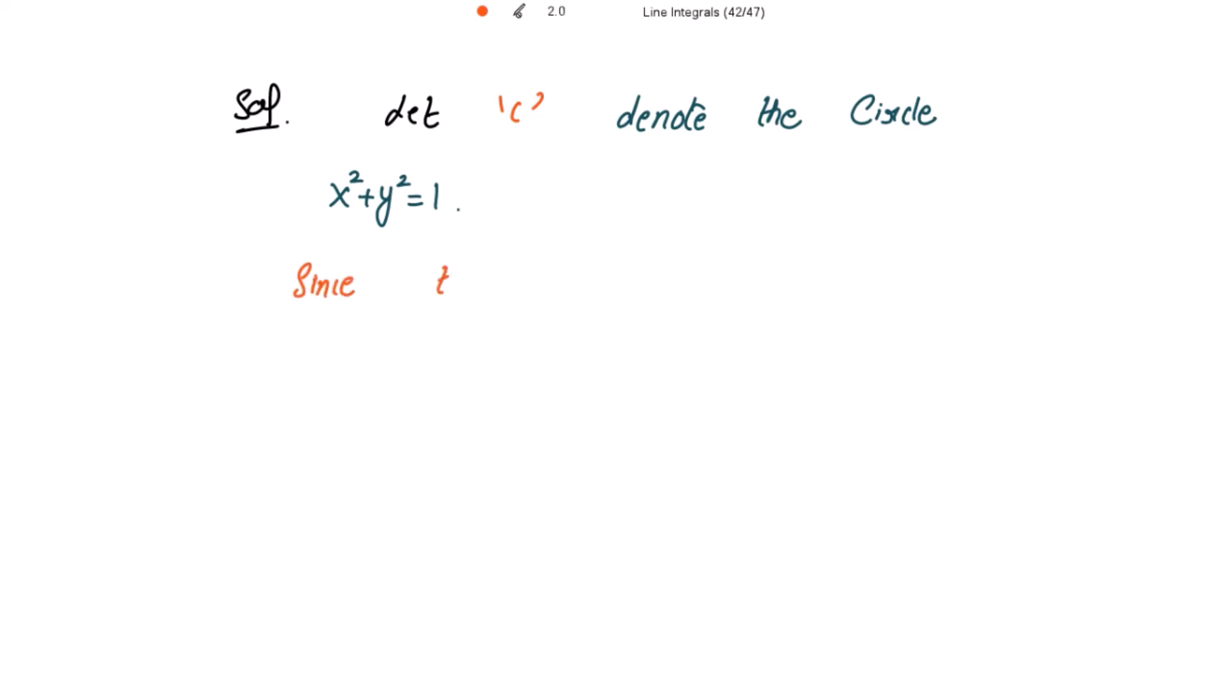Since the parametric equations of the circle are x equal to cos of t and y equal to sin of t.